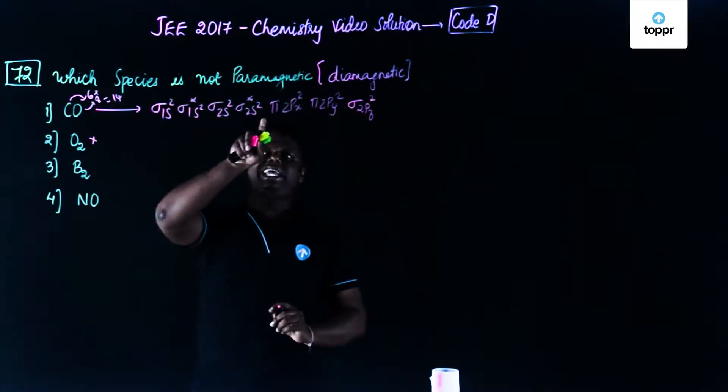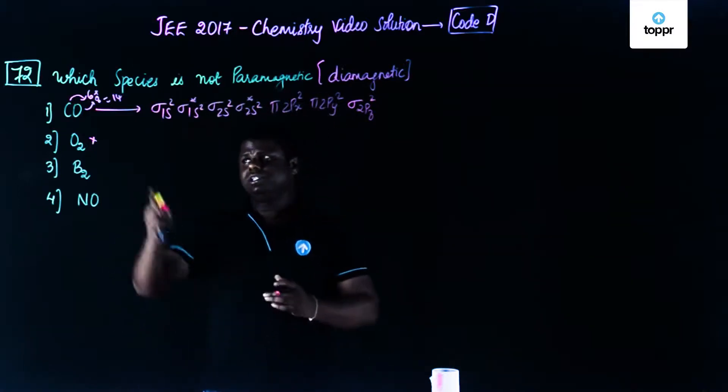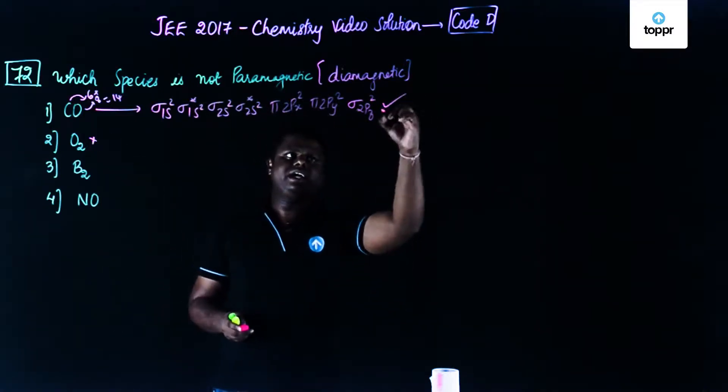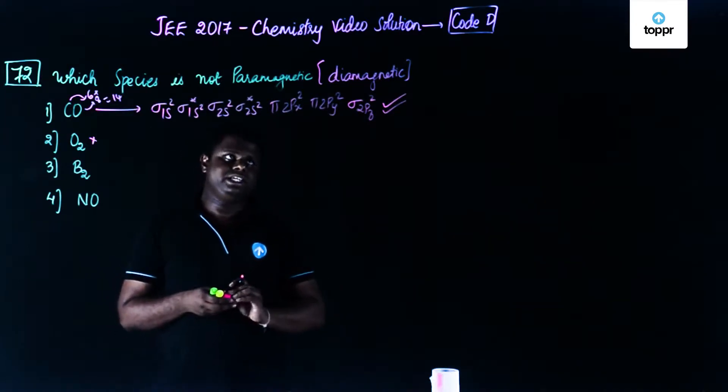Now, let's try to count down 2, 4, 6, 8, 10, 12, 14. If you could see here all the electrons are paired. This is basically the correct answer that is carbon monoxide. Carbon monoxide among these is diamagnetic.